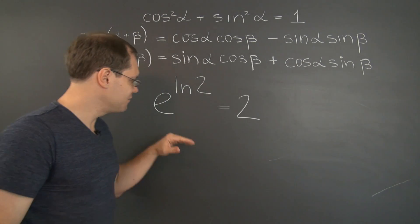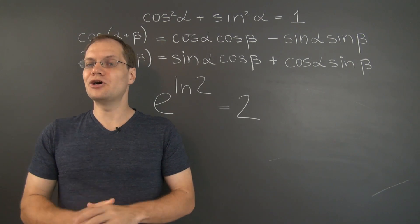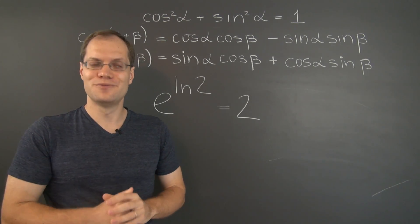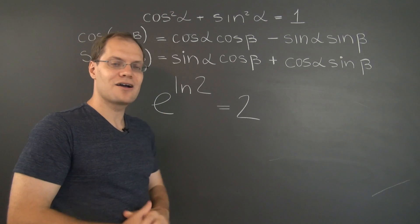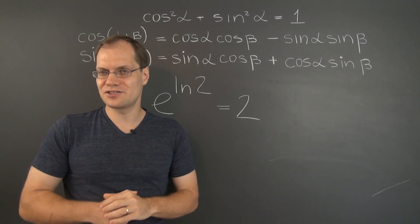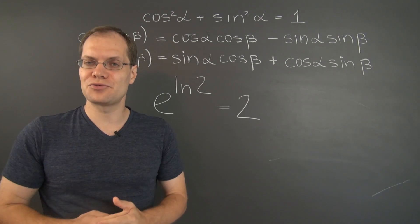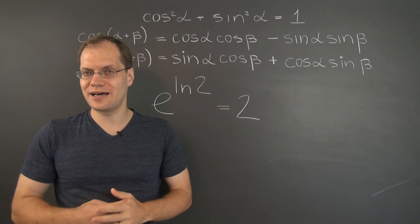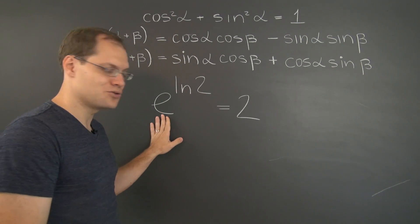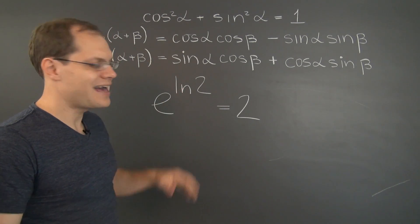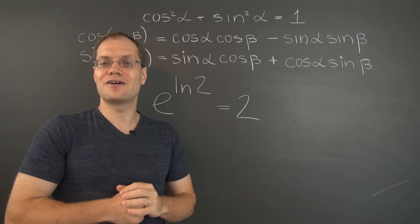But if this is your answer to the question, then the onus is on you to prove that e is irrational and that log of 2 is irrational. And I certainly can't expect anyone to remember how to do that — I certainly don't remember how to prove that e is irrational, and the same goes for log of 2.